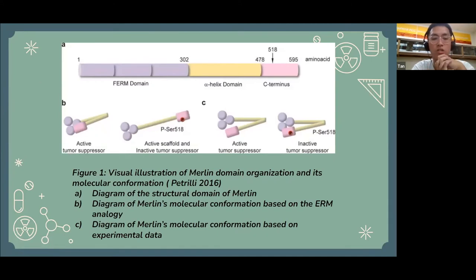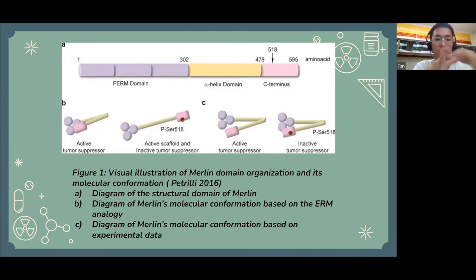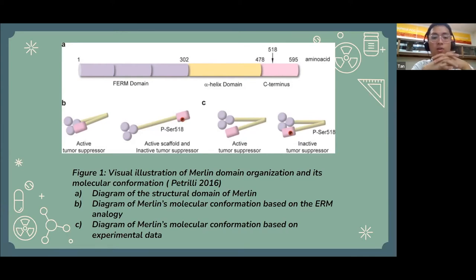This is an illustration of the Merlin FERM domain organization and its molecular conformation. The first diagram portrays the structural domain of Merlin — what it looks like visualized in 3D conformation. Then there's the diagram of the molecular conformation based on ERM analogies, which is what diagram B shows. You can see the difference between the two: one represents the activated state and the other the inactivated state. Diagram C shows basically the same thing but based on an analog analogy.